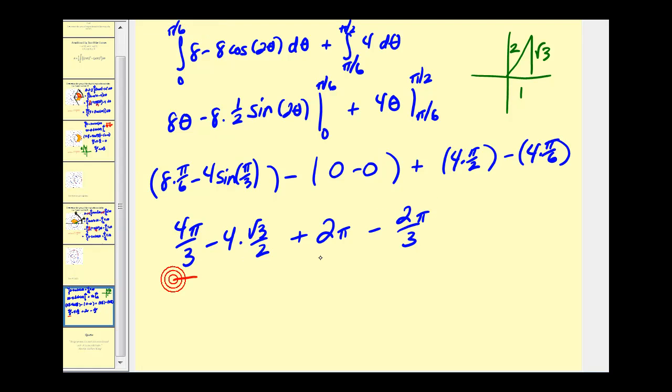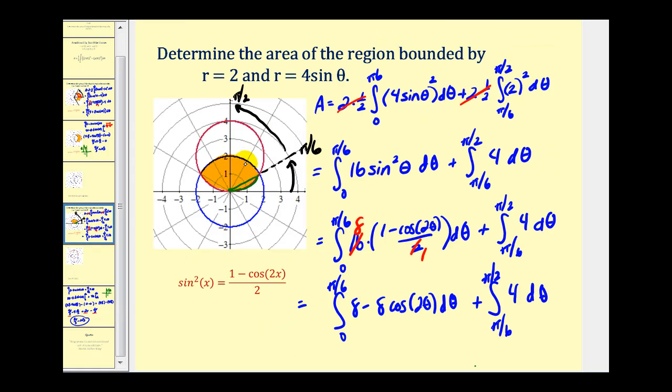We've got three terms that contain pi. Four-thirds pi minus two-thirds pi is two-thirds pi. Plus two pi is the same as six-thirds pi. So we have eight pi-thirds. Minus, this would be two square root of three. So this would be the area of the shaded region between these two polar curves.